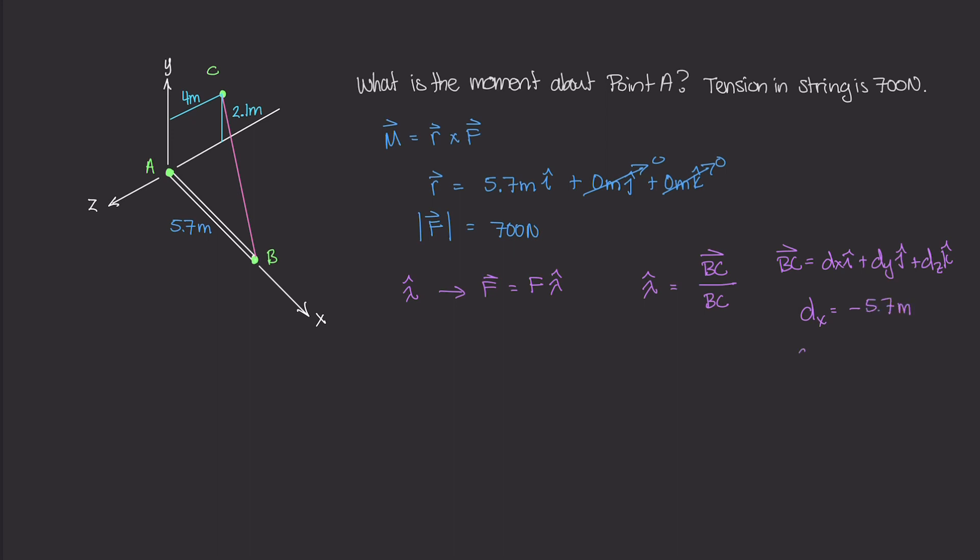What about dy? dy is going to be the y value of the ending point minus the y value of the starting point. So our y value right here is 2.1 meters, it's positive 2.1 meters, minus the y value of B. B is just zero because B only acts along the x axis, it lays on the x axis. So this is going to be 2.1 minus zero, and that gives us a value of 2.1 meters.